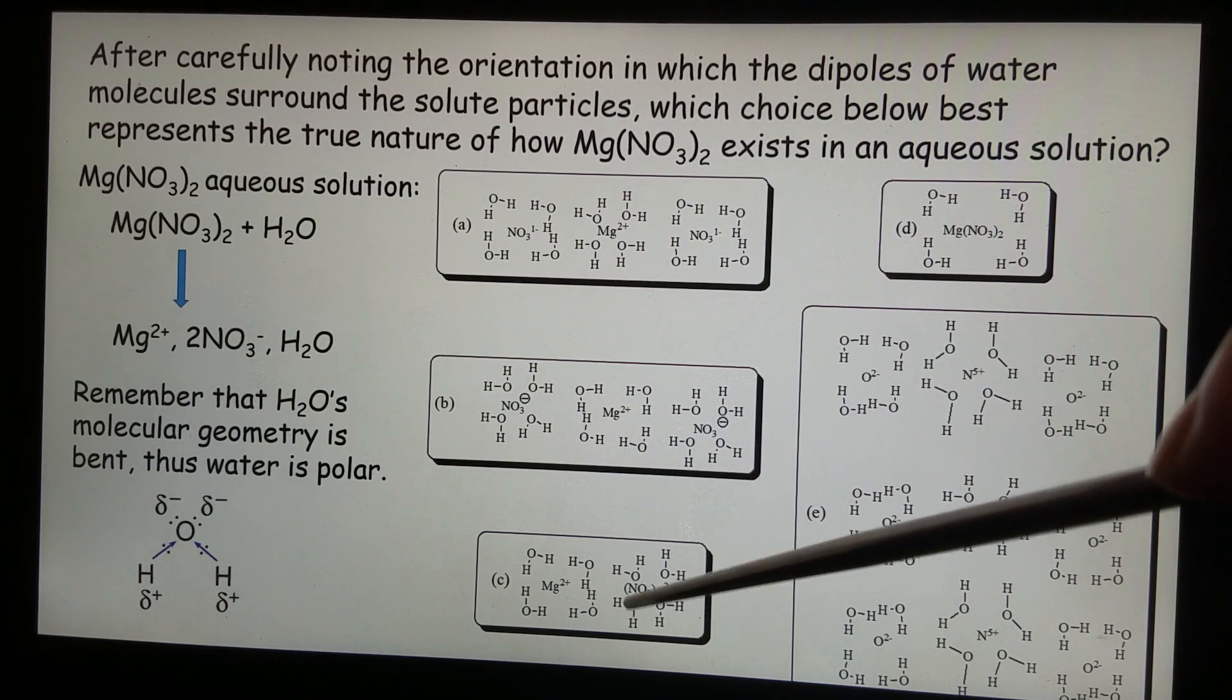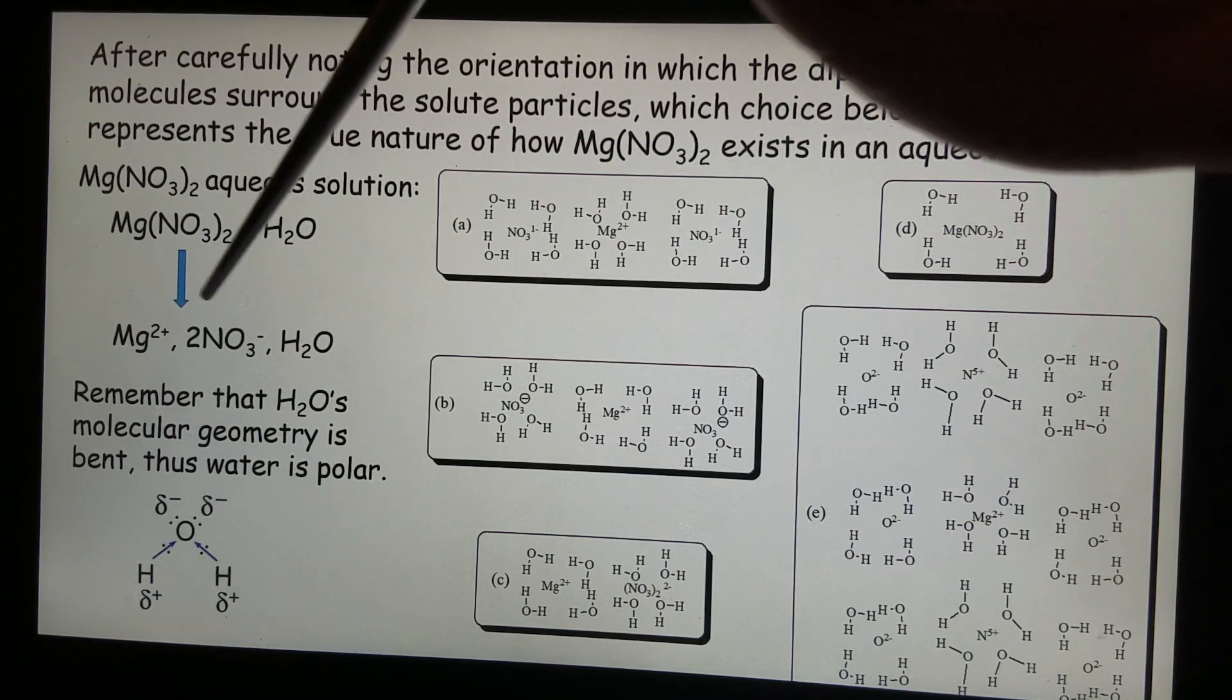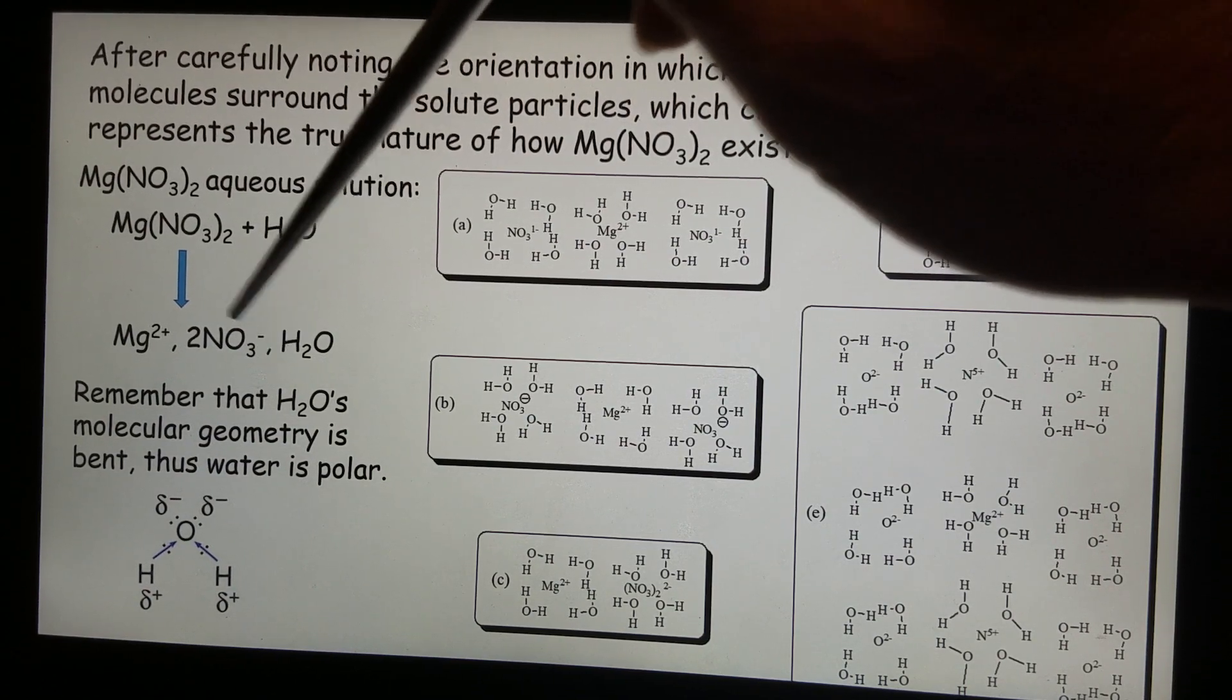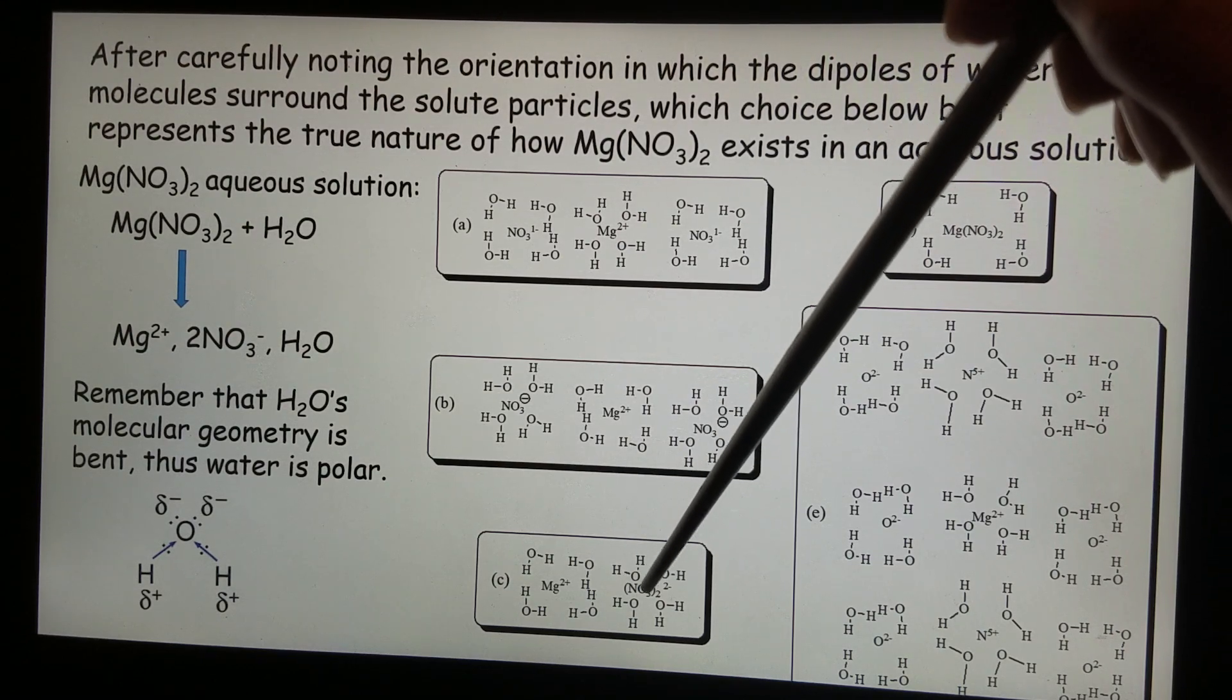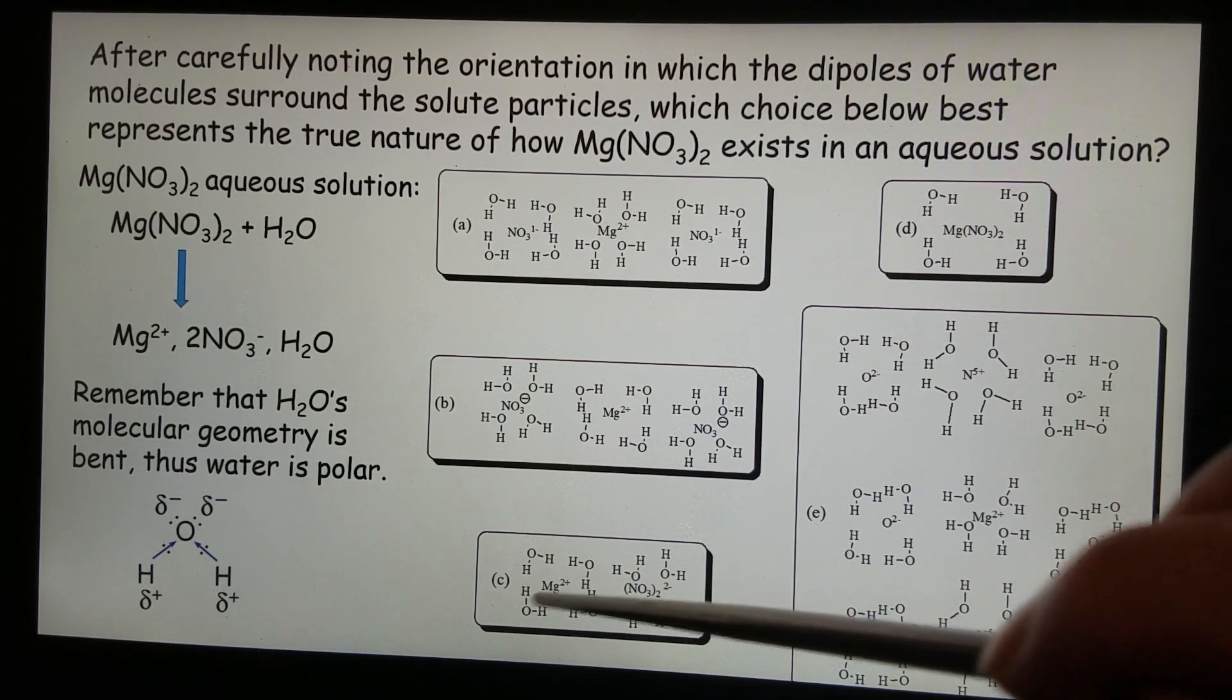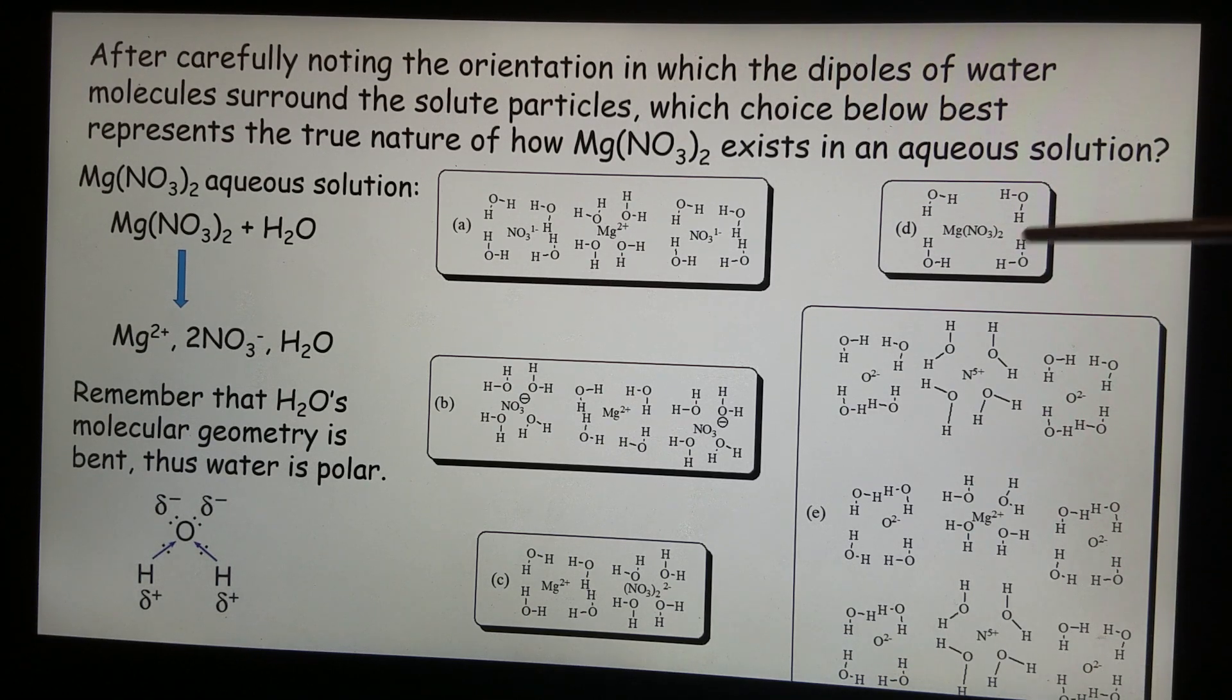C, okay, nitride when it dissolves in water, it should form NO3 minus, singly charged, negatively charged ion. There should not be NO3, then 2, then 2 plus. So C is also incorrect because of that.